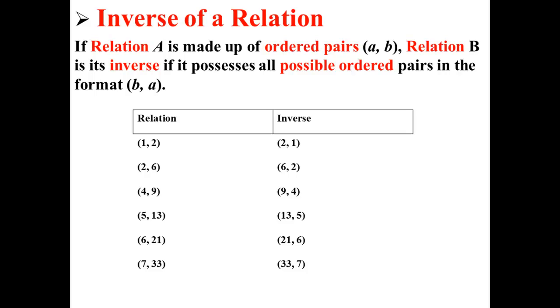This relation is an inverse because all of the (a, b) values, or you can think of them as (x, y) values, all of them are switched around. Now, if one of these was different, if for example we had (9, 6) instead of (9, 4), then this would no longer be the inverse of relation A.